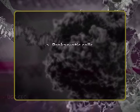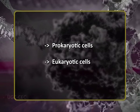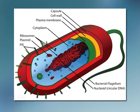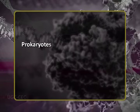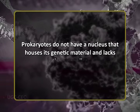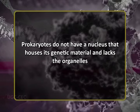Based on cellular structure, cells are broadly classified as prokaryotic cells and eukaryotic cells. Let us begin with prokaryotes. Prokaryotes are single-celled organisms, less complex in nature, and are roughly one micrometer in diameter. Unlike eukaryotes, prokaryotes do not have a nucleus that houses their genetic material and thus lack organelles — simply put, they are without a nucleus.